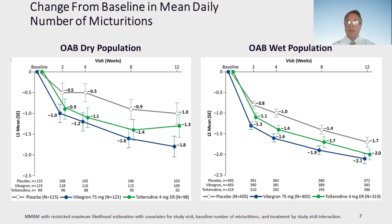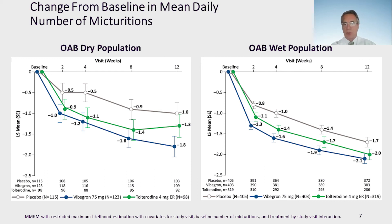Change from baseline in mean daily number of micturitions: the OAB dry population is on the left, the OAB wet population on the right. Vibegron at 12 weeks was statistically better than placebo. In the wet population, this was true at 2, 4, 8, and 12 weeks, and in the dry population at 4, 8, and 12 weeks.